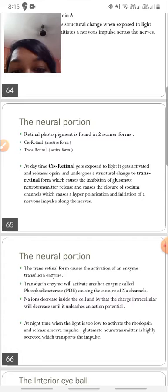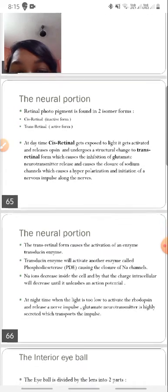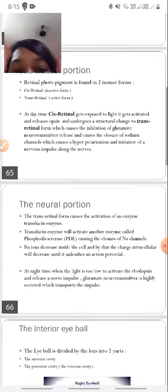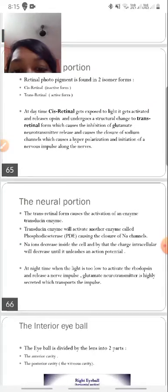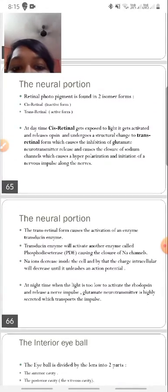Which then leads to a cascade of events like inhibition of glutamate neurotransmitter release and causes the closure of sodium channels, causing hyperpolarization and initiation of a nerve impulse along the nerves. In physiology we have learned that in order for action potential to happen, the nerves actually depolarize. But in cases of optic nerve, there is a hyperpolarization during the initiation of a nerve impulse.